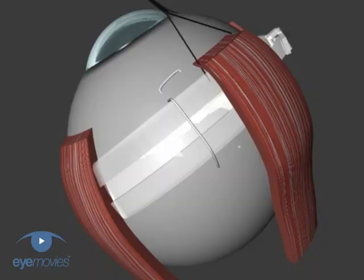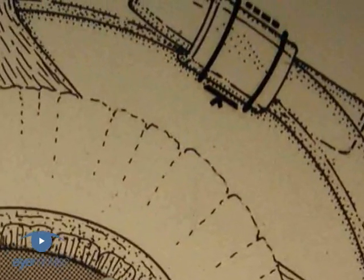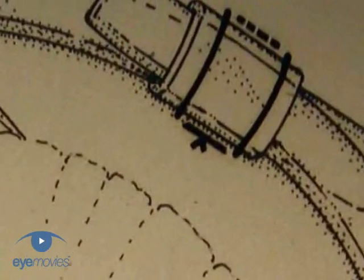The tyre is sewn in place using mattress sutures in the ordinary way. The band is then tightened over the tyre using a Watsky sleeve.